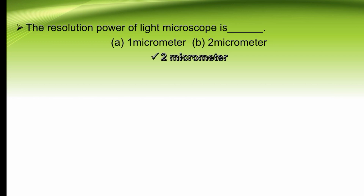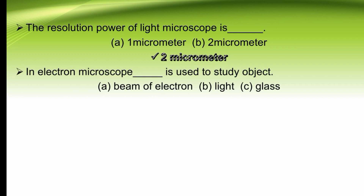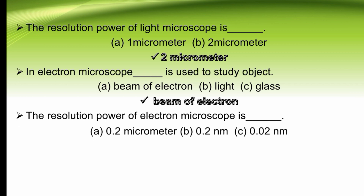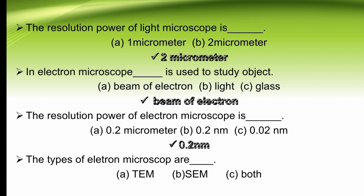An electron microscope uses dash to study objects — beam of electrons, light, or glass. In an electron microscope, a beam of electrons is used. The right option is A. The resolution power of an electron microscope is dash — 0.2 micrometer, 0.2 nanometer, or 0.02 nanometer. The right option is B, 0.2 nanometer. The types of electron microscope are dash — transmission electron microscope, scanning electron microscope, or both. The right option is both.